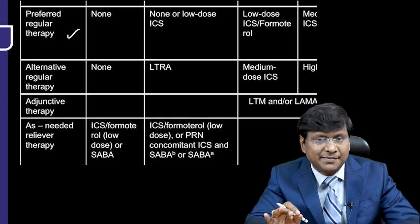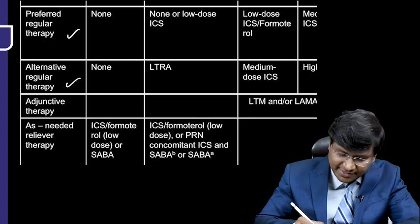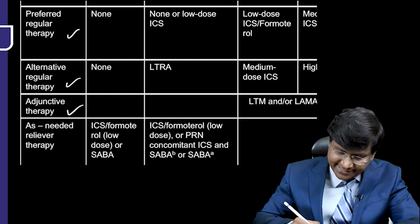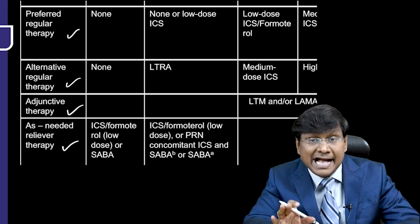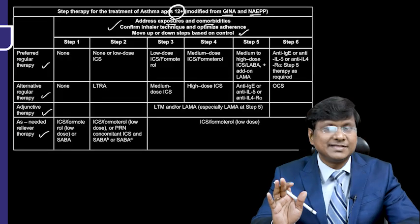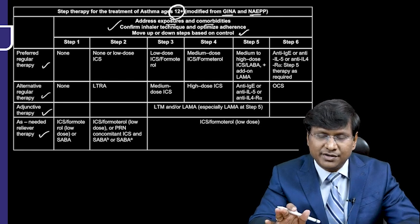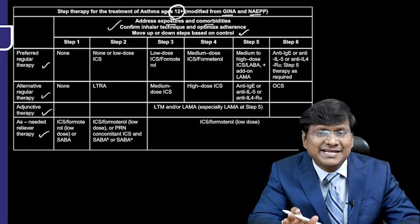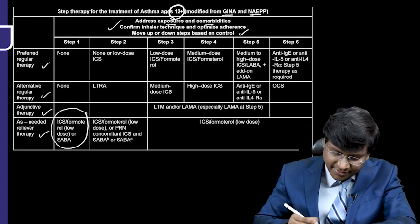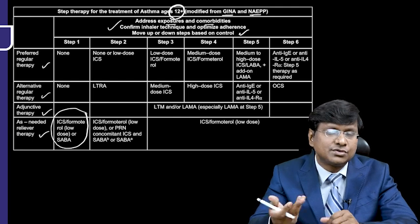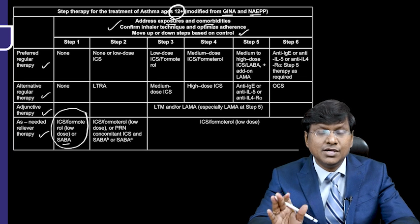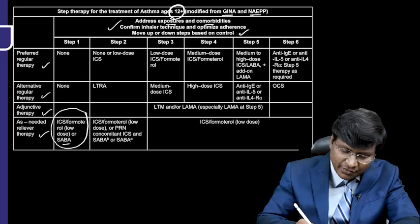There are four therapy categories: preferred regular therapy, alternative regular therapy, adjunctive therapy, and as-needed reliever therapy. In Step 1, patients don't require any regular or alternative therapy — they require only as-needed reliever therapy, which includes inhaled corticosteroids, formoterol (a LABA), or short-acting beta agonists such as salbutamol or terbutaline.